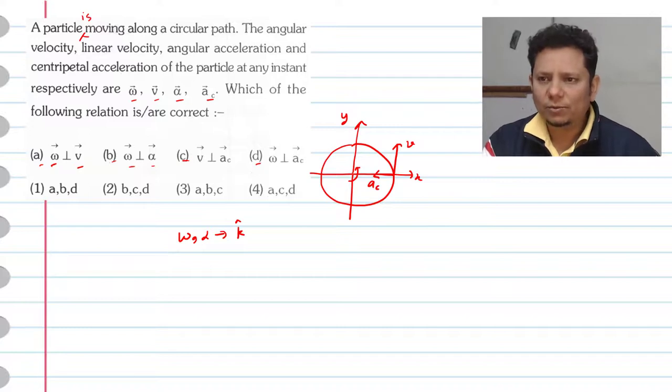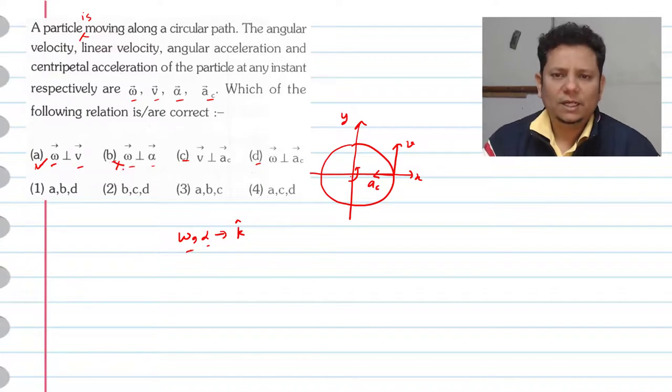If you say omega is in the z direction perpendicular to the plane, then omega parallel to v, that would be incorrect. So this option is not right.